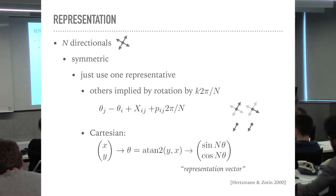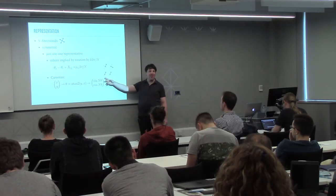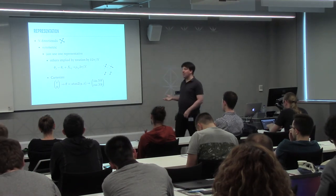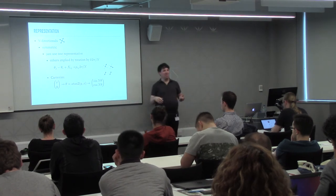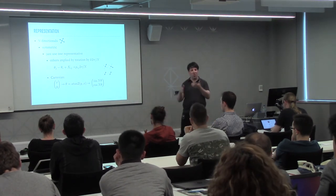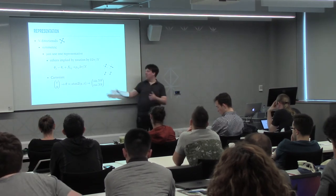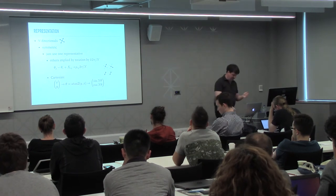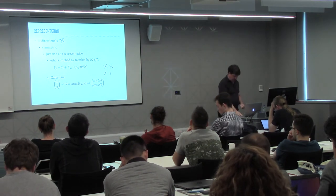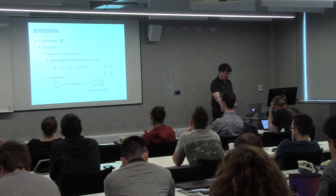Instead of actually comparing two n-rosy fields directly, I say they're equal if when I do the sin(nθ)/cos(nθ) operation on both, the results are equal. Then I don't need an integer anymore. So now we begin to like Cartesian methods more — we don't have to use those integer things.